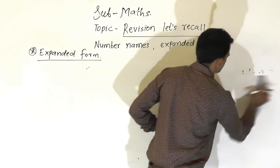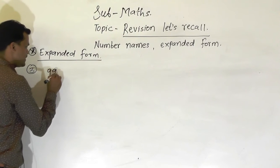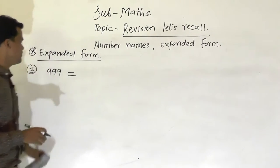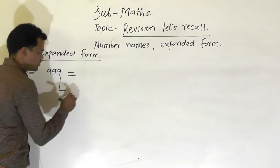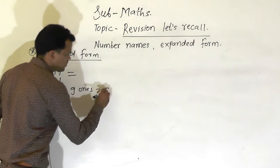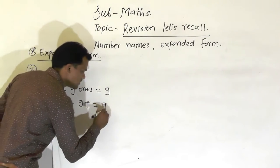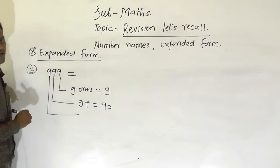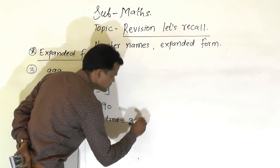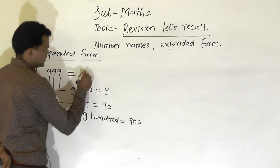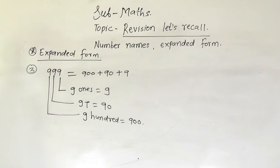One more example: 999, nine hundred and ninety-nine. We will see the place value of each digit. 9 comes at the ones place, so 9 ones is equal to 9. This 9 comes at the tens place, so 9 tens means 90. And this 9 comes at the hundreds place, so 9 hundreds is equal to 900. So the expanded form of this number is 900 plus 90 plus 9.